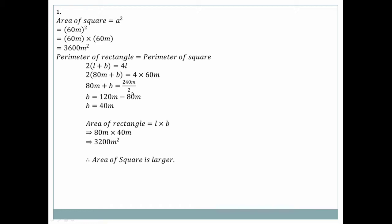So: 80 meter + B = 240 meter ÷ 2. Therefore B = 240 − 80 = 40 meter. So B = 40 meter. Rectangle area = 80 meter × 40 meter.